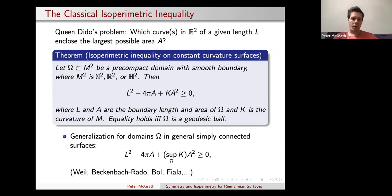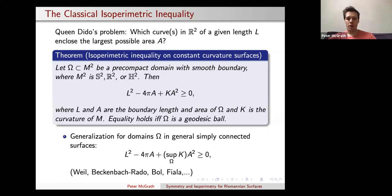Before going further, I want to mention some classical work from the 1920s and 1930s, which showed in various settings that a very similar type of inequality holds if you replace the ambient surface with one of variable curvature, given an appropriate upper curvature bound. Some of these results were due to André Weil, Beckenbach and Rado, and Bol and Fiala, with different assumptions on the curvature bounds.